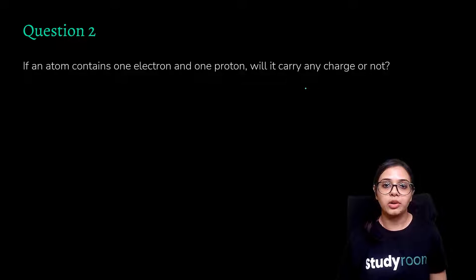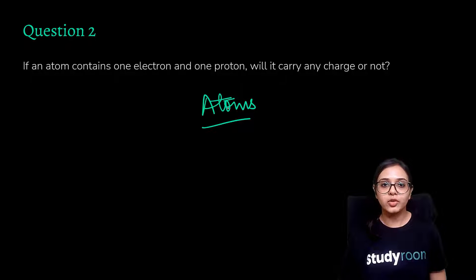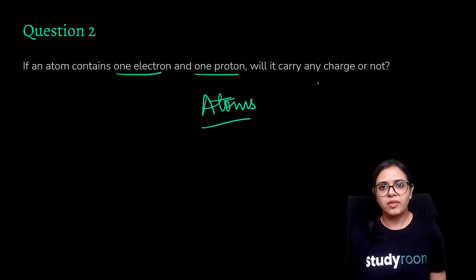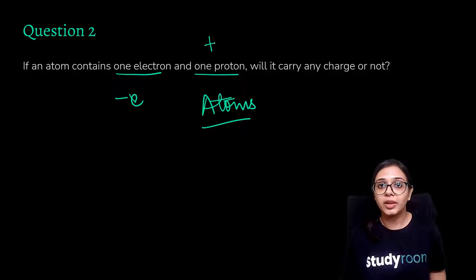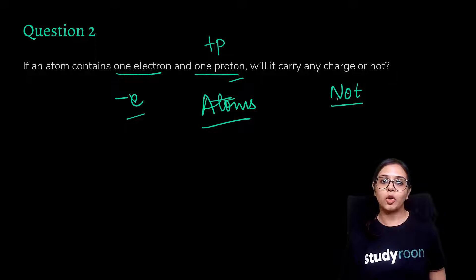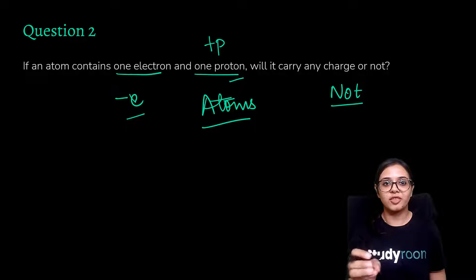If an atom contains one electron and one proton, will it carry any charge? We know that for atom stability, the number of electrons and the number of protons must be equal. So if an atom contains only one electron and one proton, it won't have any charge because the negative charge of the electron is balanced by the positive charge of the proton — there is neither an excess of electrons nor an excess of protons. This means the atom is in a stable state and will not carry any charge.